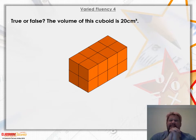Last one, we're going to have a look at altogether before you get started on the sheets. True or false? The volume of this cuboid is 20 centimeters cubed. So we can see here we've got one, two cubes, three cubes, four cubes.